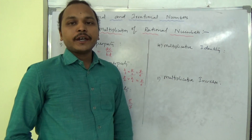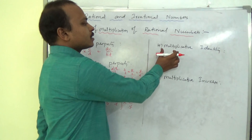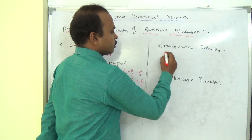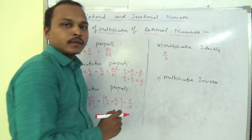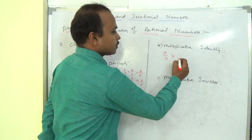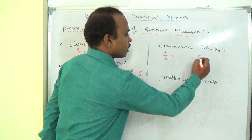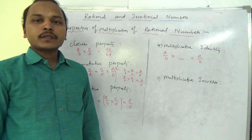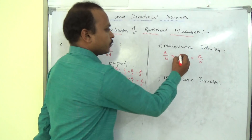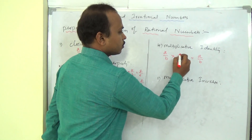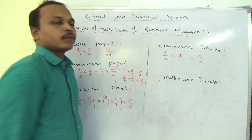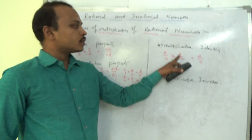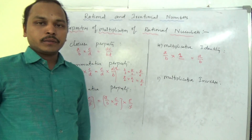Now, existence of multiplicative identity. If a fraction is a/b, what should we multiply to get the same a/b again? Obviously, the number 1. If I multiply any rational number by 1, we get the same rational number. So 1 is the multiplicative identity for a rational number.